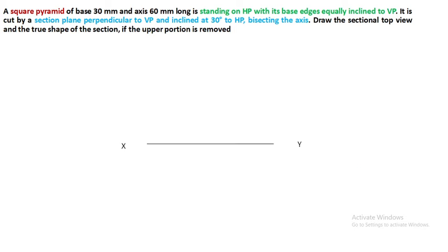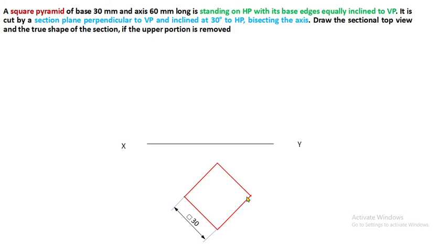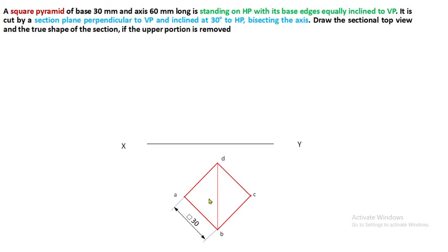Draw XY and make sure the base side is 30 mm. Both sides have to be at 45 degrees. The base is 30 mm and all sides are 30 mm. These two edges make 45 degree inclination with respect to VP — that is what 'base edges equally inclined to VP' means. Now give notations: the base square is ABCD, and edges AD and CD are equally inclined to VP. Being a pyramid, all the slant edges from the top view are OA, OB, OC, and OD.